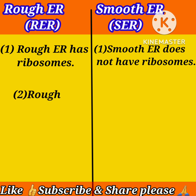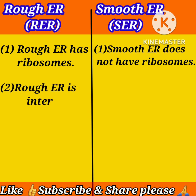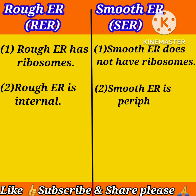Second difference: rough endoplasmic reticulum is internal, while smooth endoplasmic reticulum is peripheral.